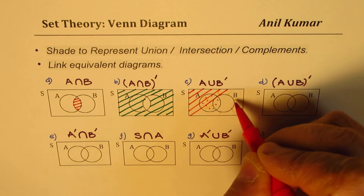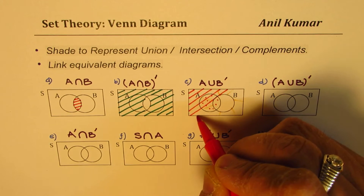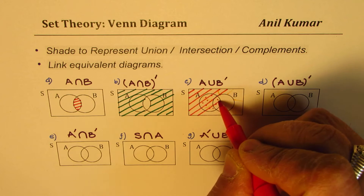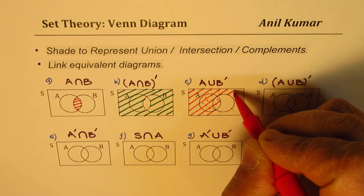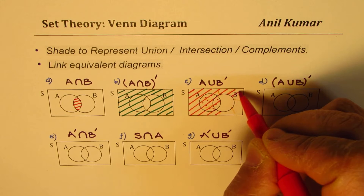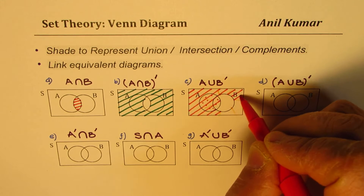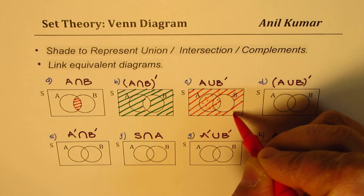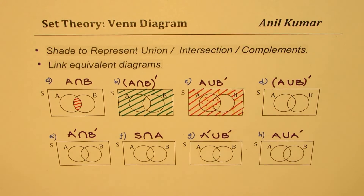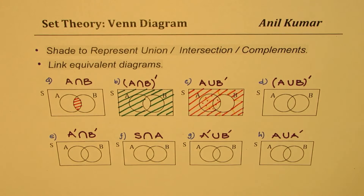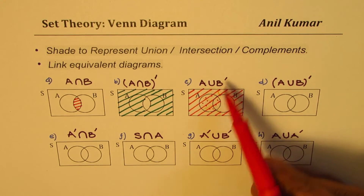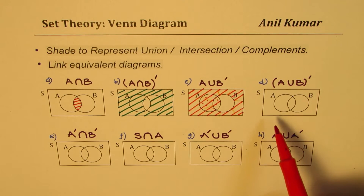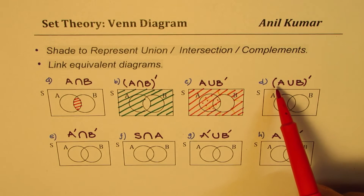I hope that is clear — we leave only that one portion unshaded. So that is how we shade A∪B'. The next one: we need to find the complement of the union of A and B, which means 'not A∪B'.